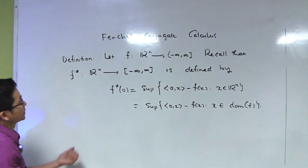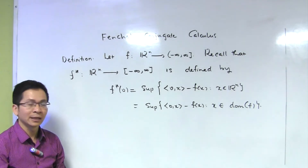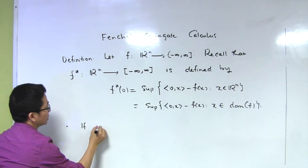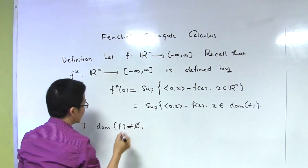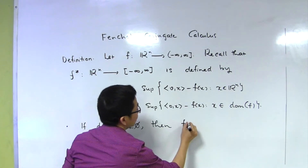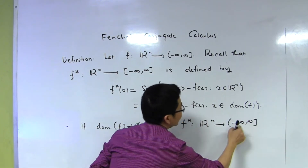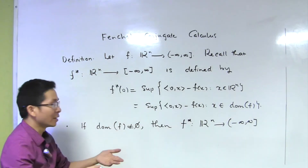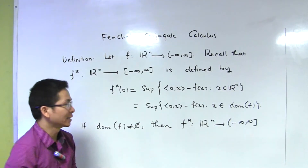In this definition, f is not necessarily convex. We see some important facts: if the domain of the function f is non-empty, then f star is a function from Rn to the extended real line where minus infinity is excluded. And even though f is not a convex function, the Fenchel conjugate is always a convex function.